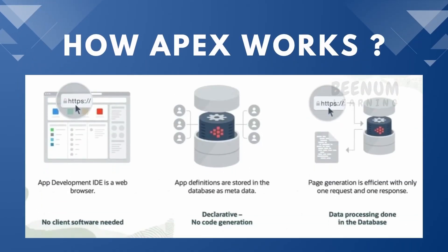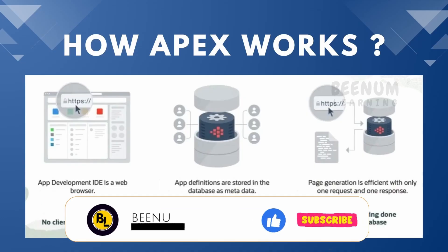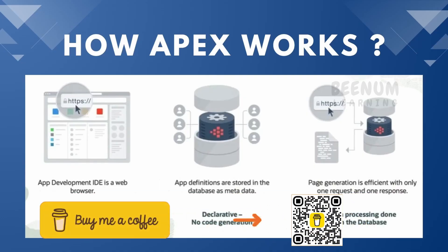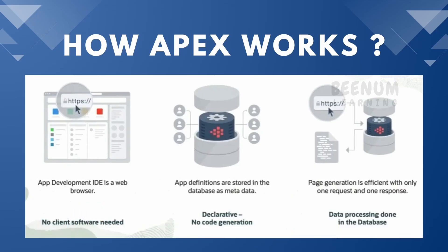Here is a simple screenshot of how Apex works. To work with Apex, you just need a browser on your computer — no client software installation required, making Apex seamlessly usable through a browser-based IDE. All app definitions are stored in the database as metadata, not locally in the browser. There is no code generation; everything is processed and managed by Oracle. There is only one request sent from the browser to the backend — validations, authentications, processing, and updating data on the screen are all handled by procedures and the backend database.